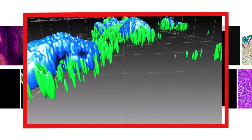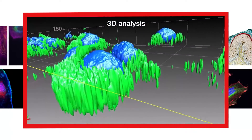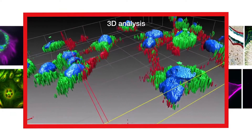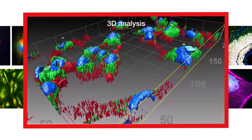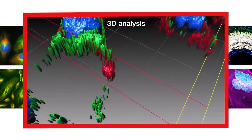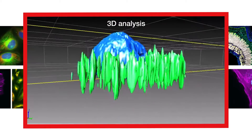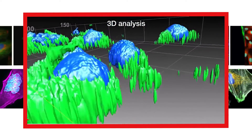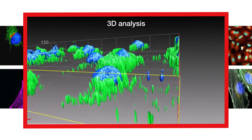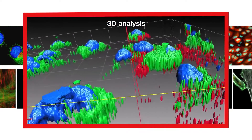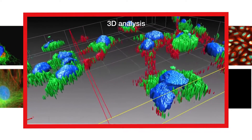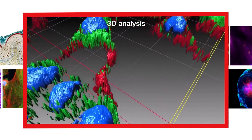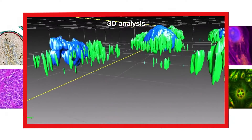3D analysis modules automatically segment objects using any 2D frame in the Z-Stack, perform cell or event counting and co-localization while measuring point-to-point distances, surfaces, and volumes to give you a total look at your data.